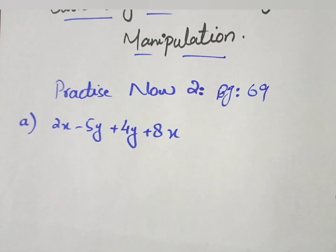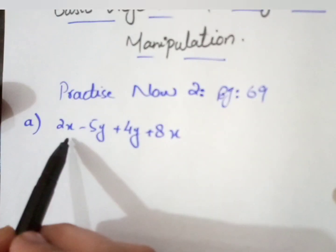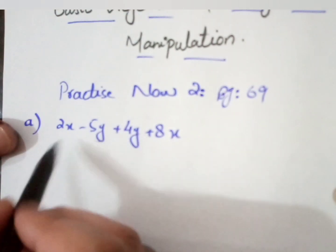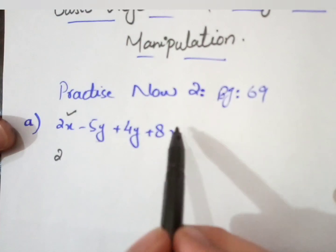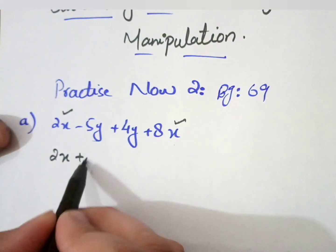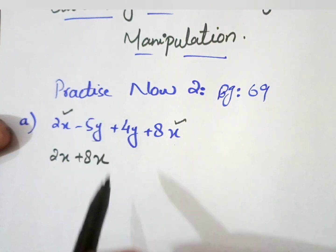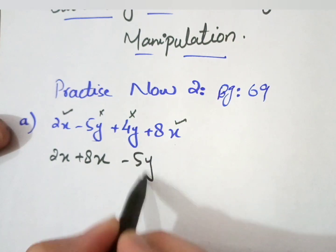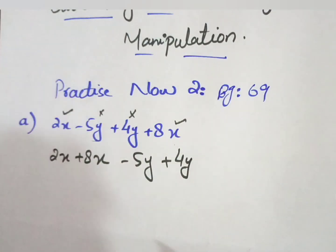In practice, we have to solve algebraic expressions. First of all, you can see this expression which has both x terms and y terms. So firstly we arrange the terms — we write down the terms with the x variable together: 2x plus 8x, then write down the terms with the y variable together: minus 5y plus 4y.